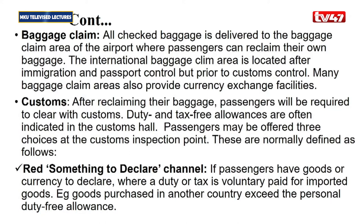We have baggage claim, which is also still under the arrival formality. All checked baggages are delivered to the baggage claim area of the airport where passengers normally reclaim their own baggages. The international baggage claim is normally located after immigration and passport control, but prior to customs control. Many baggage claim areas also provide currency exchange, so you can exchange your currency to the current currency of the destination you've arrived into.